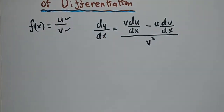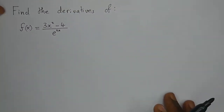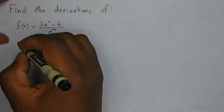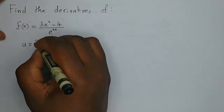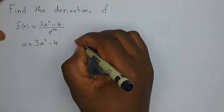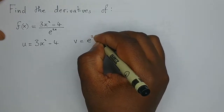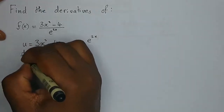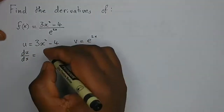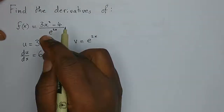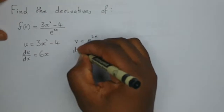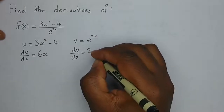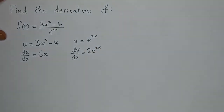Let's look at this example: find the derivative of these two functions that are dividing. Whatever we have in the numerator is our u, so u equals 3x squared minus 4, and v is the denominator which is e to the power 2x. Finding the derivative of u: du/dx is 6x — 4 is a constant so it remains as is.